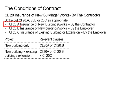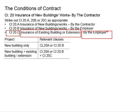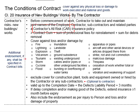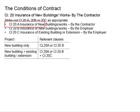Clause 20A is about the insurance of new buildings or works by the contractor. Clause 20B is about the insurance of new buildings or works by the employer. The insurance here refers to the Contractor's All Risk insurance, also known as CAR. The meaning of striking out clause 20A, 20B, and 20C as appropriate is that at least one of these clauses will not be relevant.